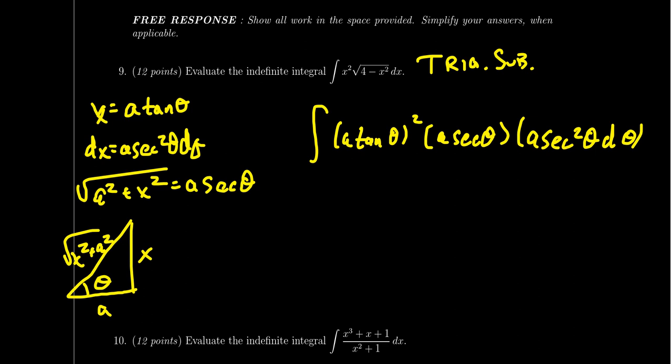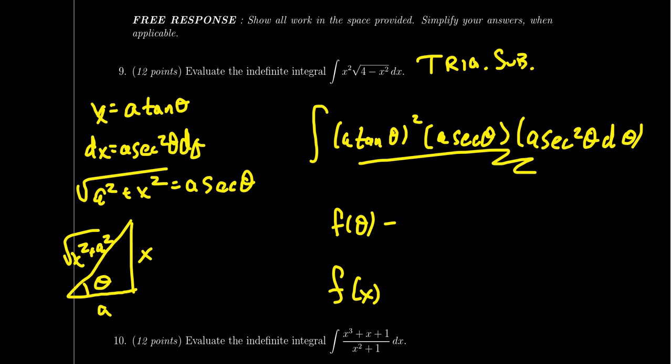Once that's done, you can start doing your substitutions. Then you proceed to simplify and compute the integral. At the end, you should switch the result back into an antiderivative in terms of x, unless it's a definite integral — in that case, you can switch the bounds and find the numerical value using the trigonometric function. But most likely this will be an indefinite integral, so if you have a function in terms of θ, that earns partial credit. For full credit, you need to switch it back to a function of x, and as an indefinite integral, you need that plus C.